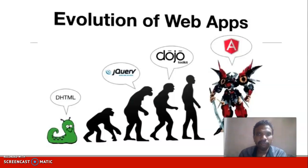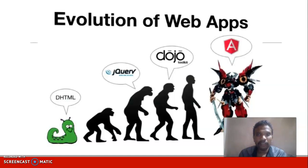The evolution of web application is concerned, it initially starts with HTML and CSS. After that the extended language DHTML played a vital role in web application. Then it extended into jQuery, which plays a vital role for creating web applications, along with Dojo toolkit and framework. At last we entered into Angular, one of the famous frameworks for web application creation.